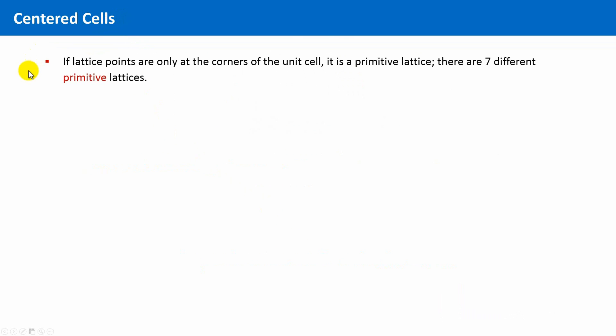We already know that there are seven crystal systems. And if the lattice points are only at the corners of the unit cell, it is a primitive unit cell.